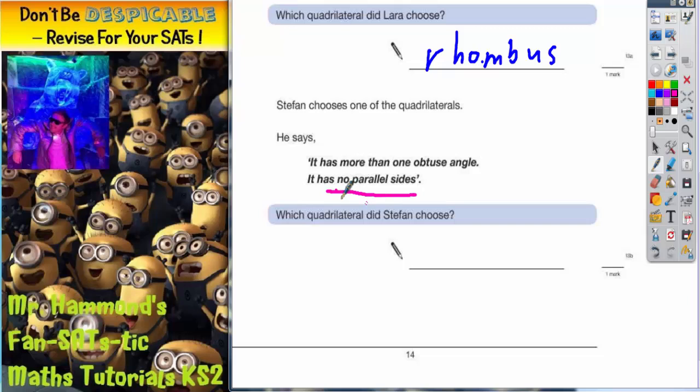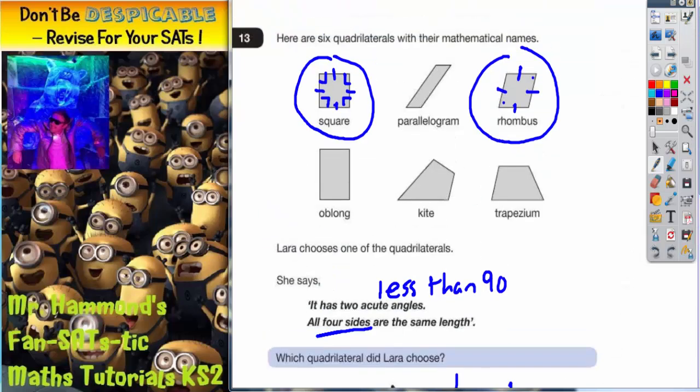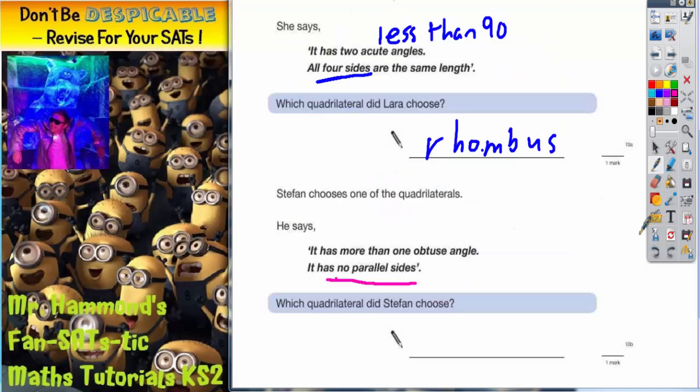Now the easy one here is the no parallel sides. Because actually of the six main quadrilateral types, they've all got parallel sides except for one. And that's the kite. So the answer has to be kite.